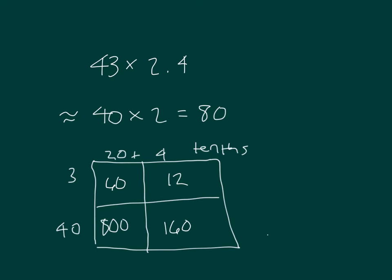And 40 times 4 is 160. So this is 72 and 960. Add them together. We're adding tenths. 2, 3, 1,032 tenths, which equals 103.2.